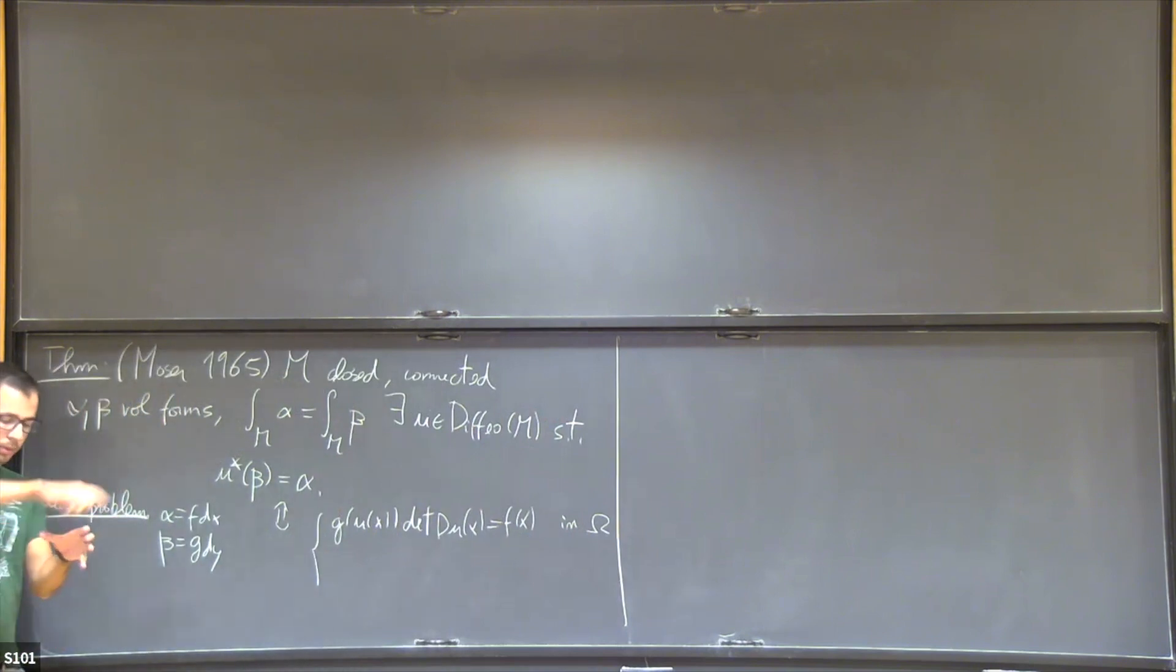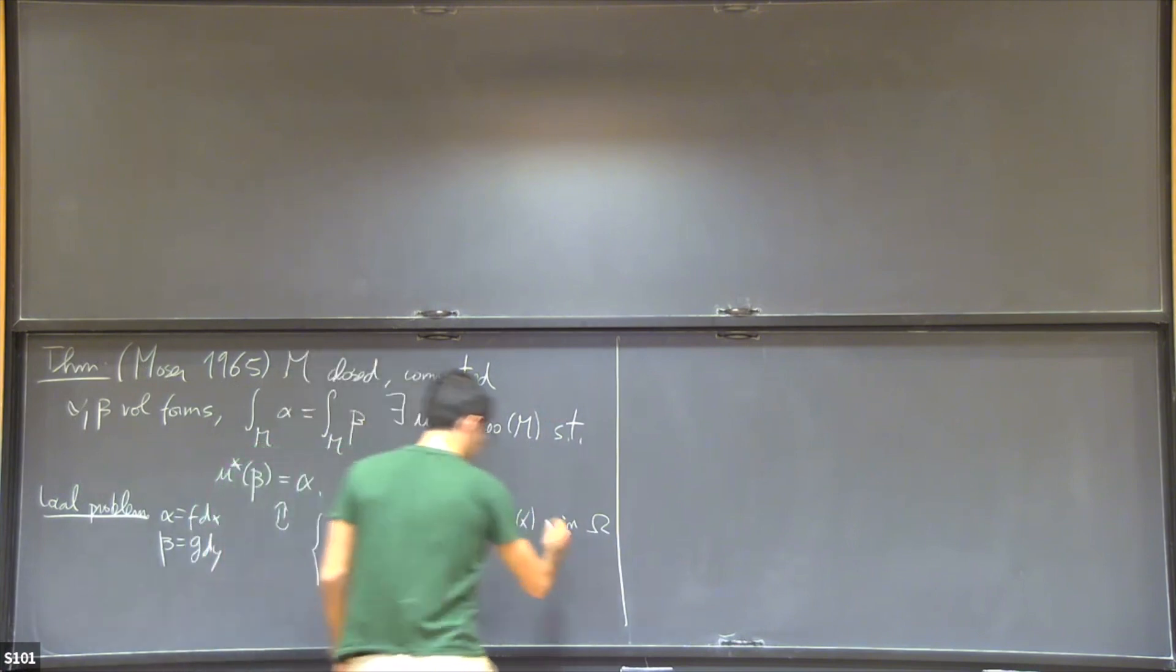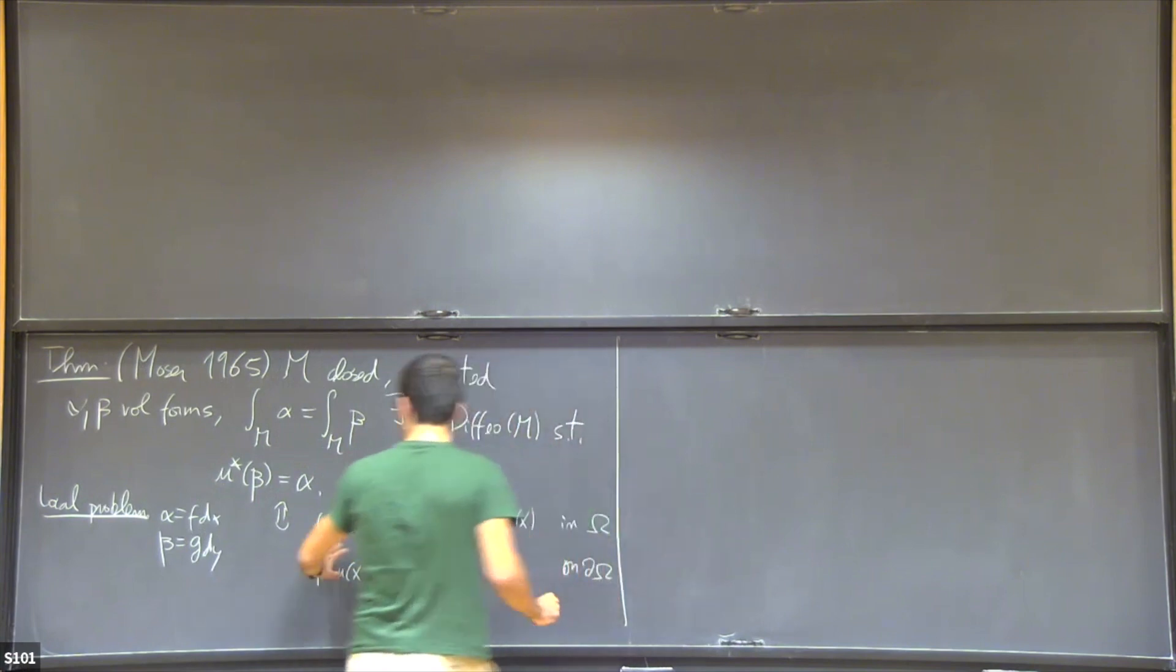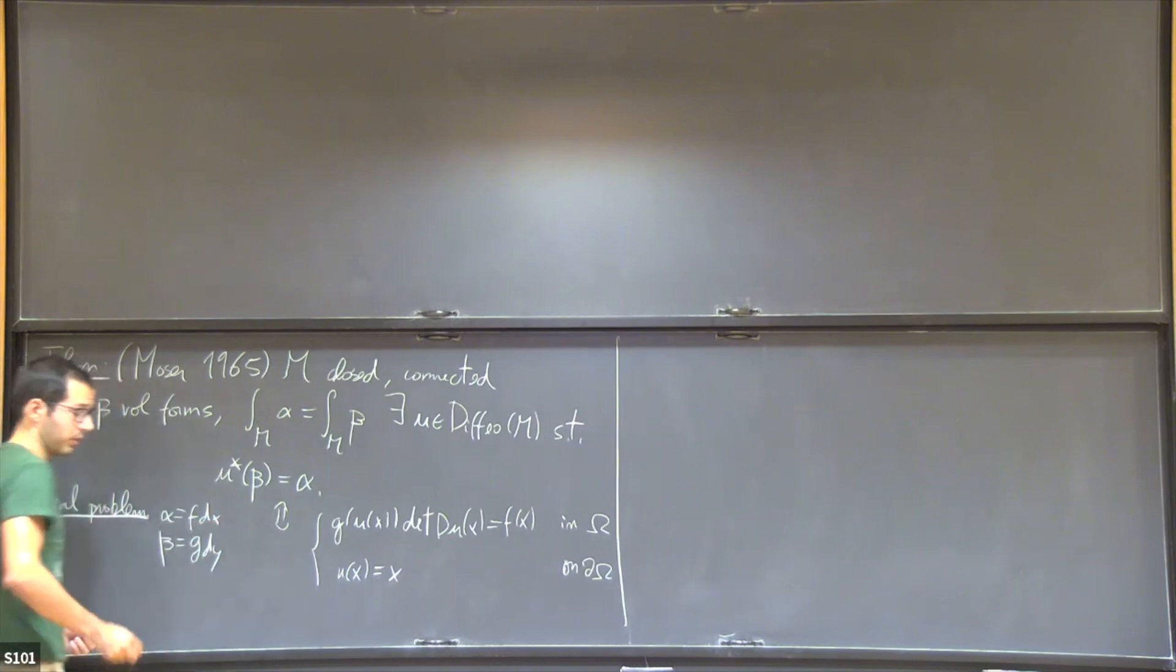This equation takes the form g of U of x times determinant of DU of x equals f of x. To reduce to a local problem, you take a partition of unity cover of your manifold. You should have a nice boundary condition, which allows you to glue things together. This would be the identity on the boundary. This is just a local version of the pullback.